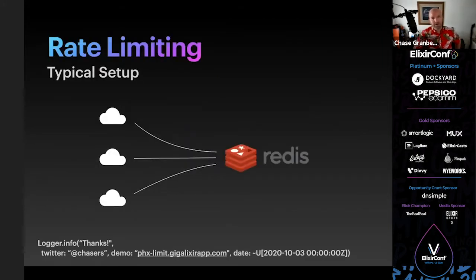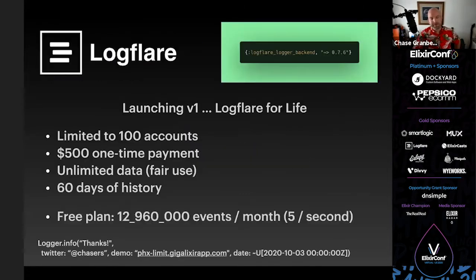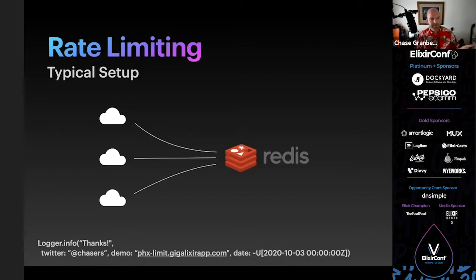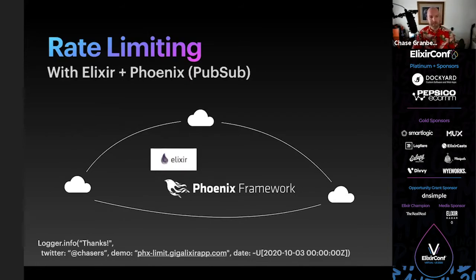I did it a little differently. Typically people reach for Redis — a request comes in, you increment data in Redis, and when the next request comes in you look at Redis and rate limit based on that. But we have the BEAM and distribution, so I felt it could be a little bit different. I really didn't want to use Redis — not that there's anything wrong with it, Redis is great software.